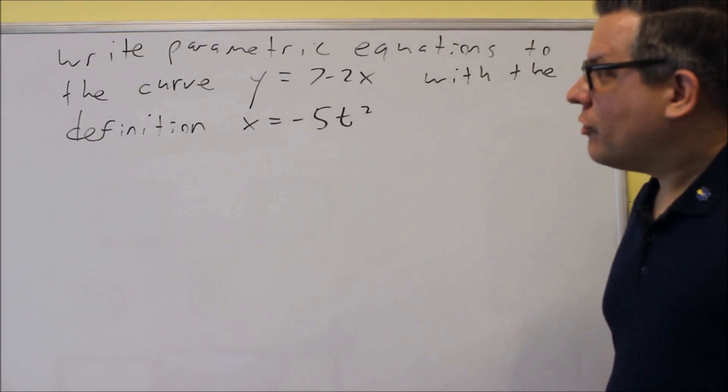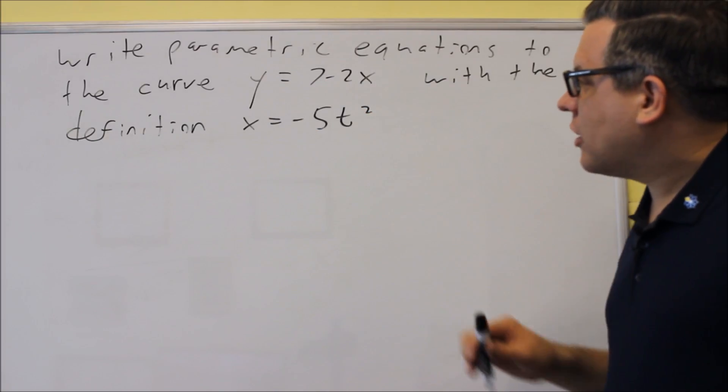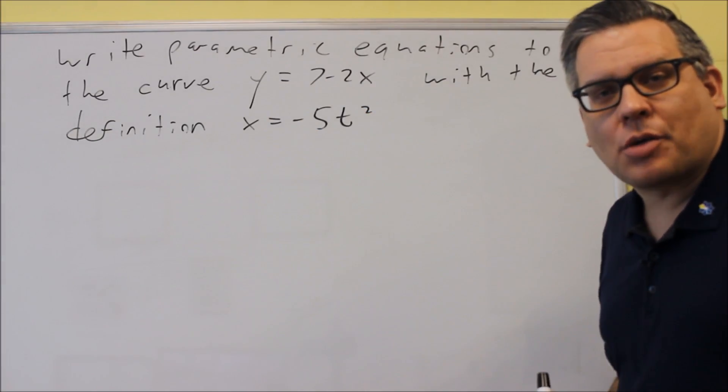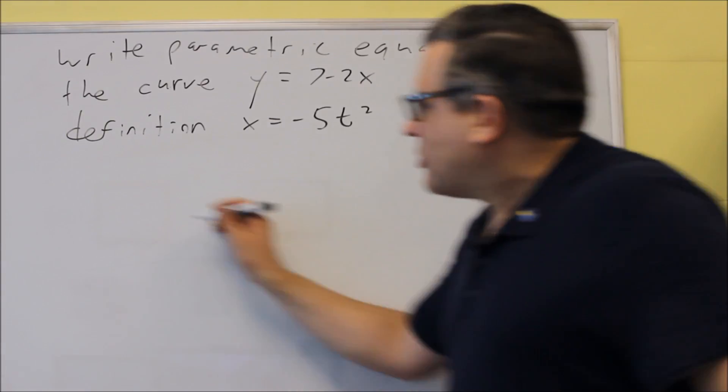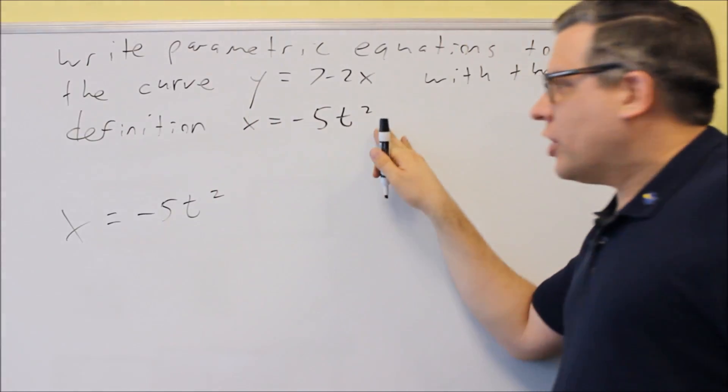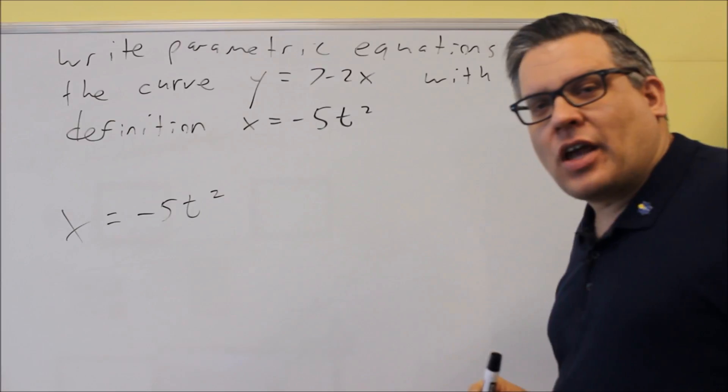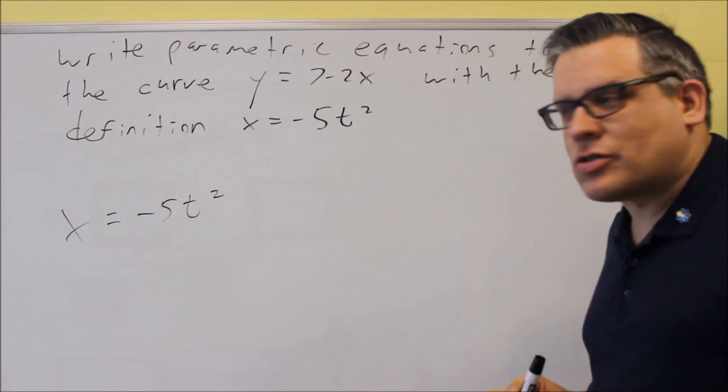For the last one, we've got the line y = 7 - 2x and x = -5t². We want to come up with the parametric equations, same as before. You already have the first one given, x = -5t². It doesn't matter if it has a square or not, it can be any power.